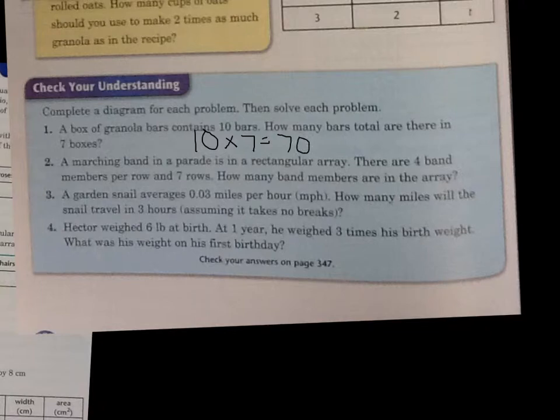How about this one? A marching band in a parade is in a rectangular array. There are 4 band members per row, and 7 rows. So we have 1, 2, 3, 4. We have 7 of these rows. That's 2 rows, 3 rows, 4 rows, 5 rows, 6 rows, 7 rows.